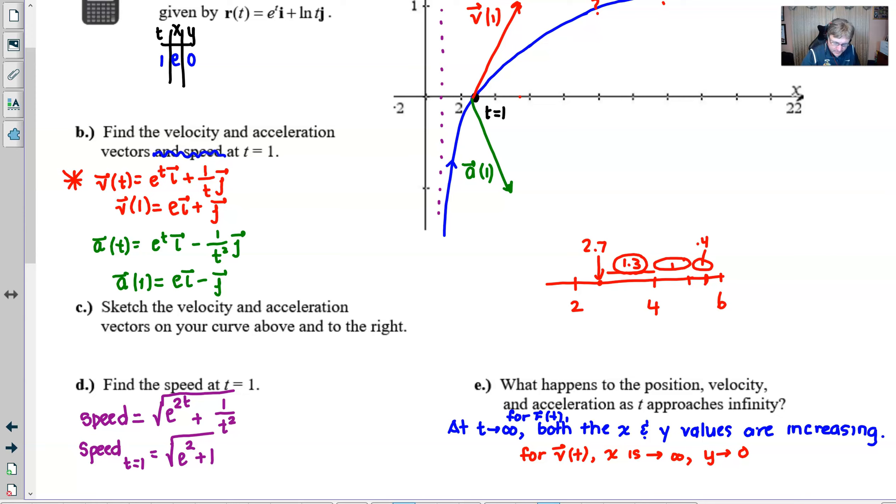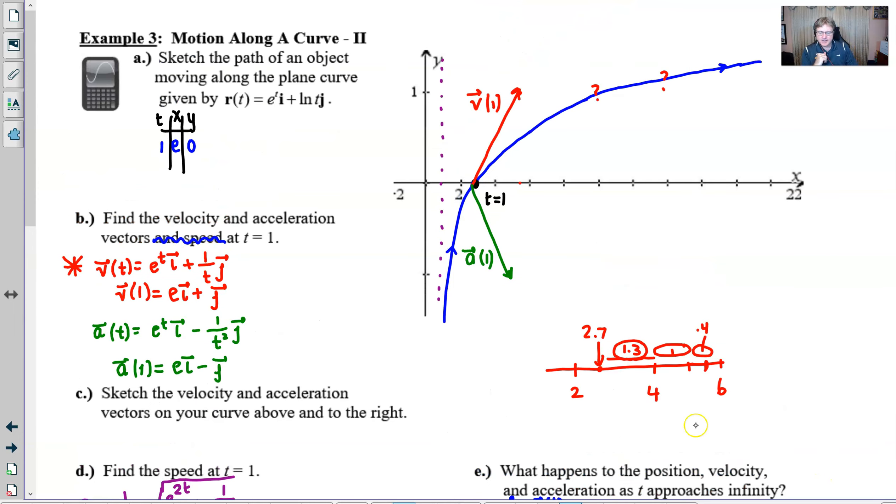For the acceleration, we're going to handle that in a very similar way. Again, you see that the e to the t is going to cause x to approach infinity, but the one over t squared, even with the negative, is going to cause the y component to approach zero again.